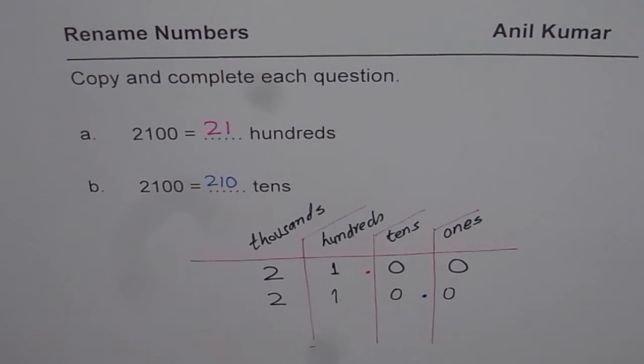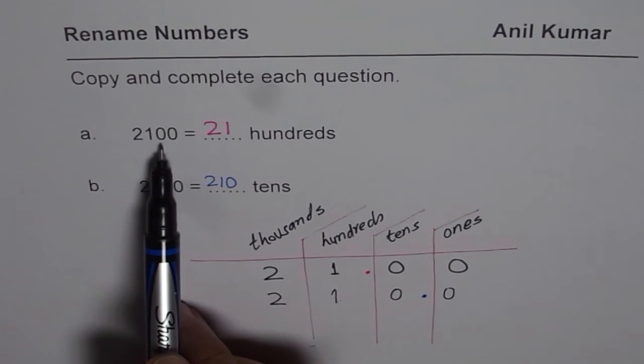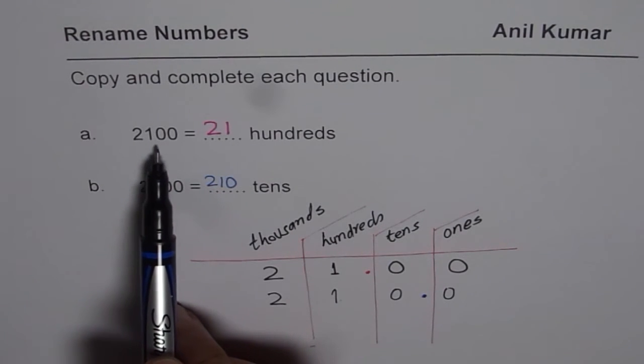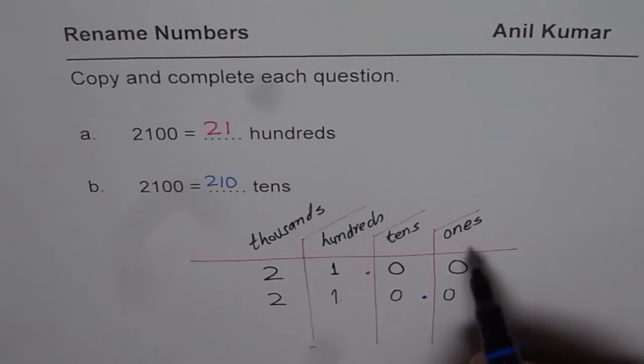Now, the question for you is 2100 is how many ones? Well, 2100 is 2100 ones.